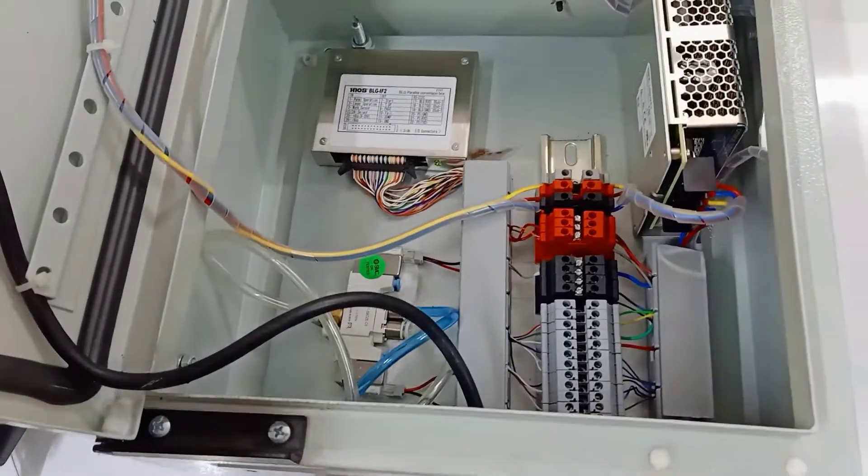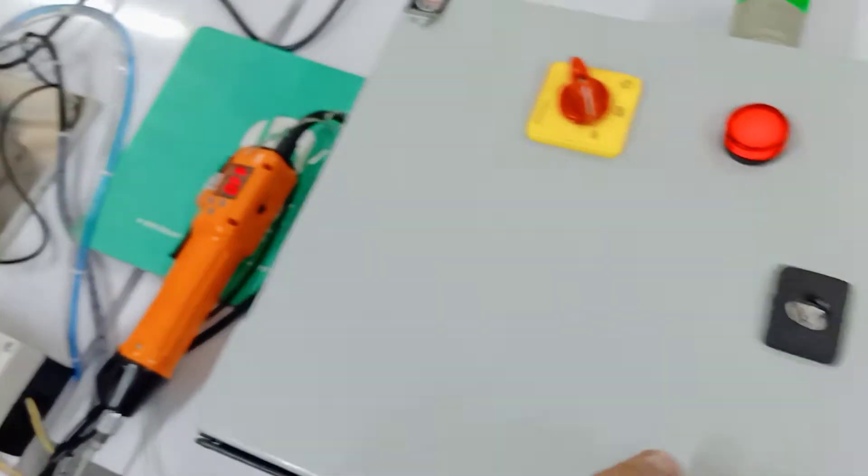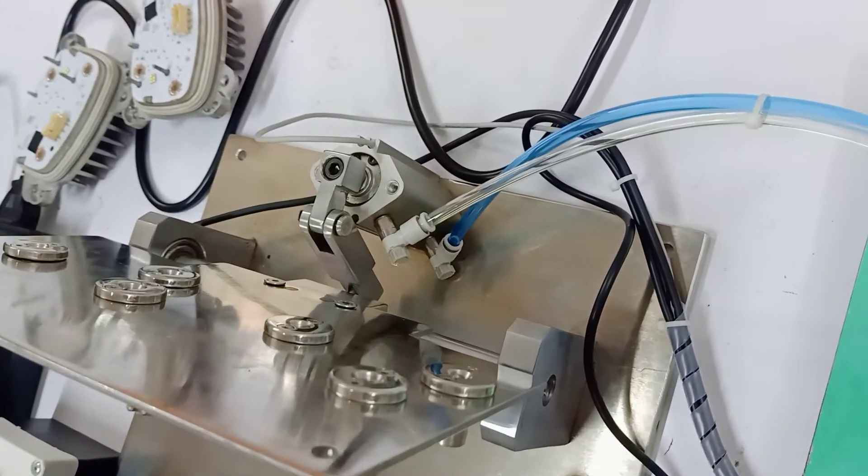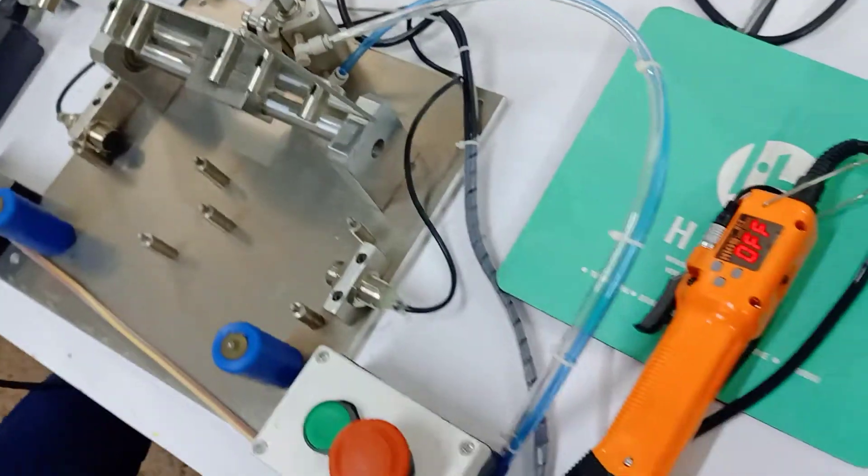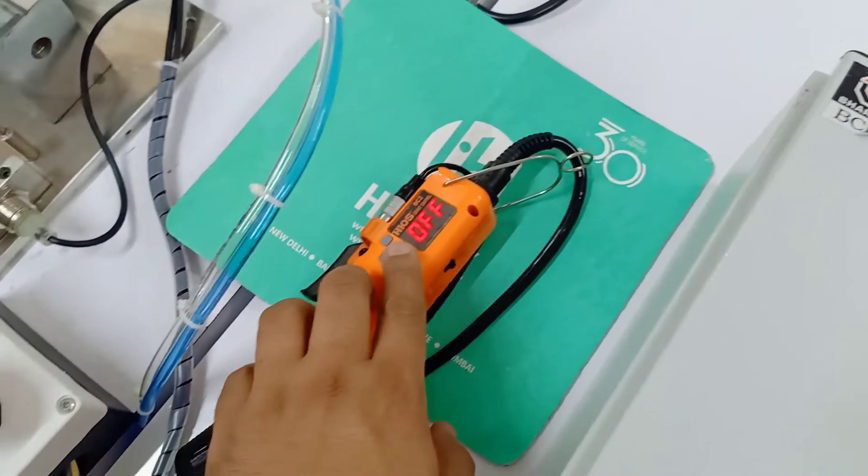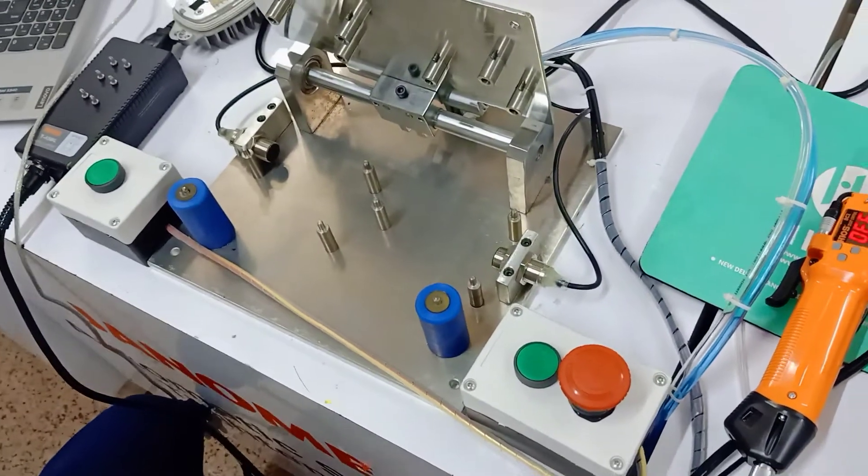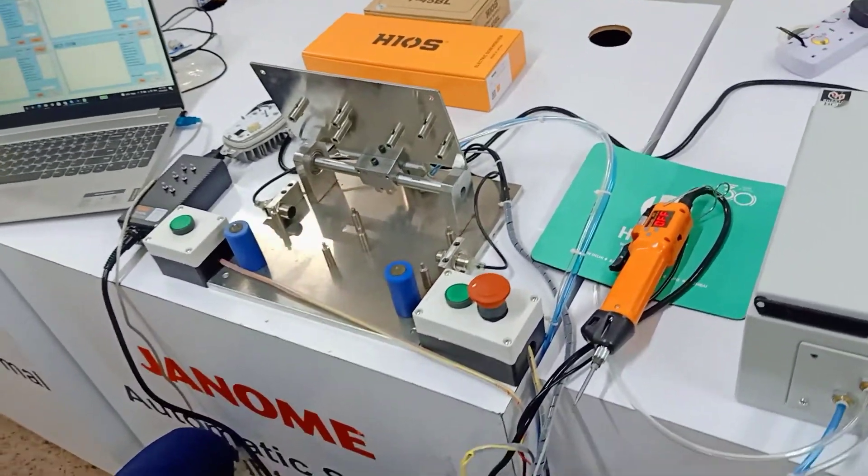Power supply, solenoid valve to operate this pneumatic cylinder. As you can see, the screwdriver is in off condition because there is no part placed. We'll start with the operation now.